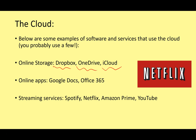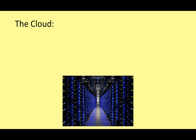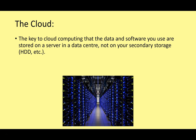You've also got all the common streaming services — Spotify, Netflix, Amazon Prime, YouTube — which you access via your web browser rather than downloading content on a DVD. All this data and information is located online. The key to cloud computing is that the data and software you're using are stored on a server in a data center somewhere in the world, not on your own secondary storage — not on your hard drive or SSD. You don't need to know where it is, as long as you've got an internet connection.